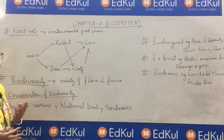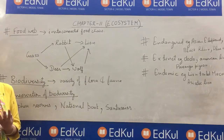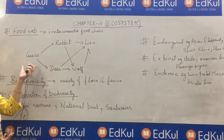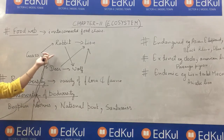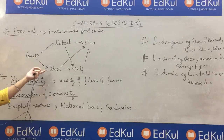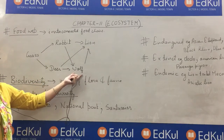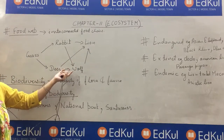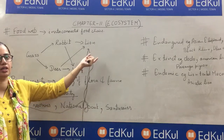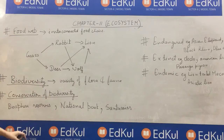The number of interconnected food chains are known as a food web. For example, grass can be eaten by rabbit and it can be eaten by deer as well. This rabbit can be eaten by either lion or wolf. The same deer can be eaten by either lion or wolf, and the wolf can be eaten by lion. So you can see a number of food chains are interconnected — this is known as a food web.